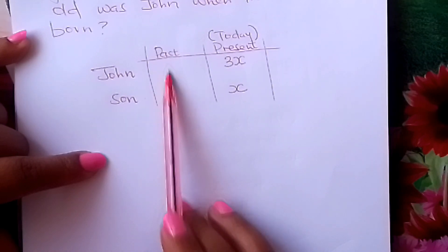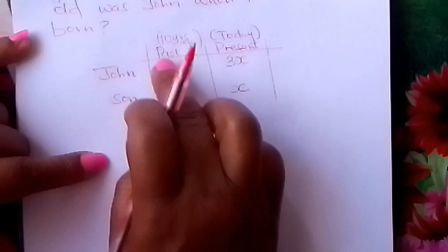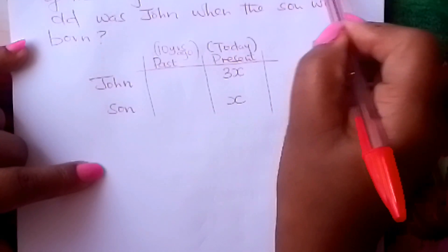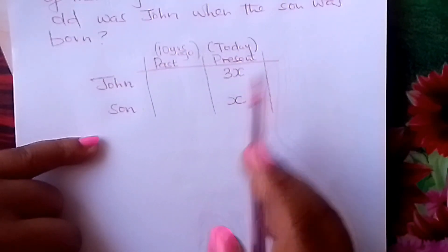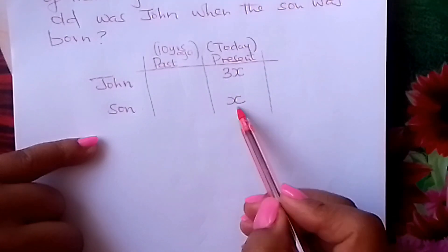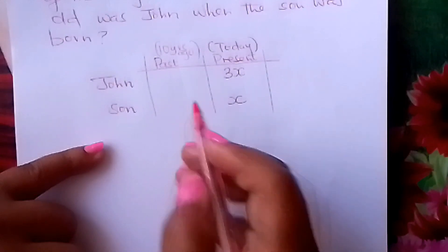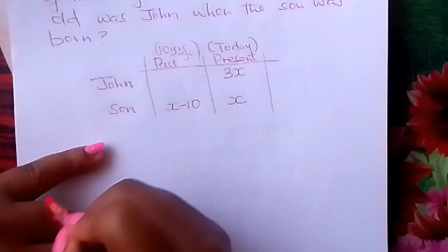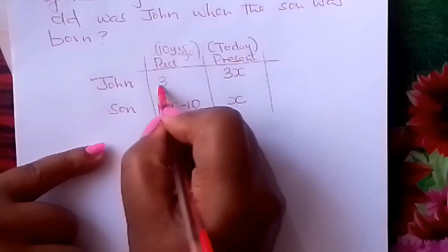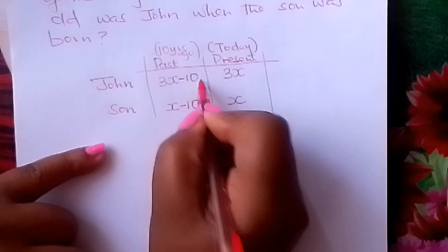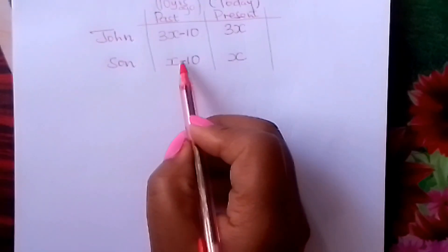Then we are told ten years ago — so we move to the past column. Ten years ago, the sum of their ages was 44. If today the son is x years, ten years ago you subtract ten, giving x minus 10. The same for the father: if the father is 3x years today, ten years ago you subtract ten, giving 3x minus 10. So each one of them will have their age less by ten.